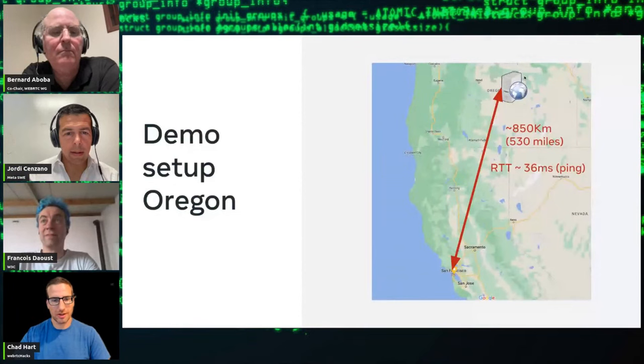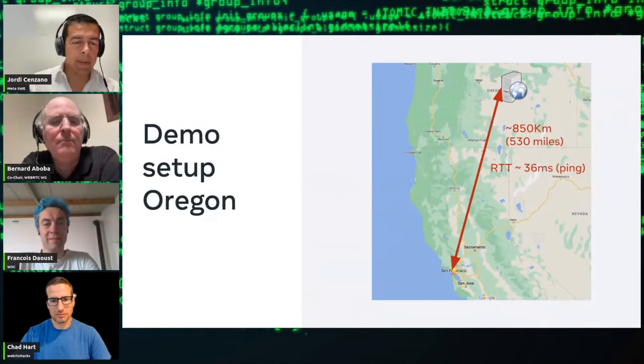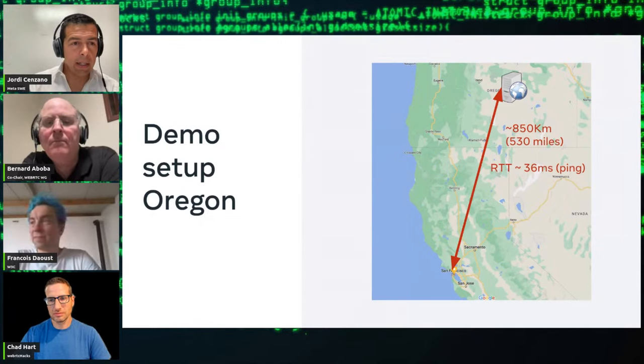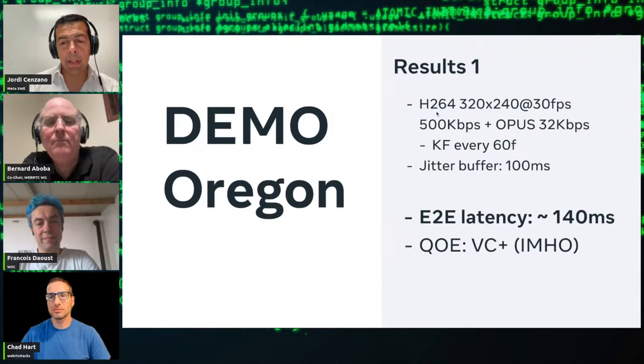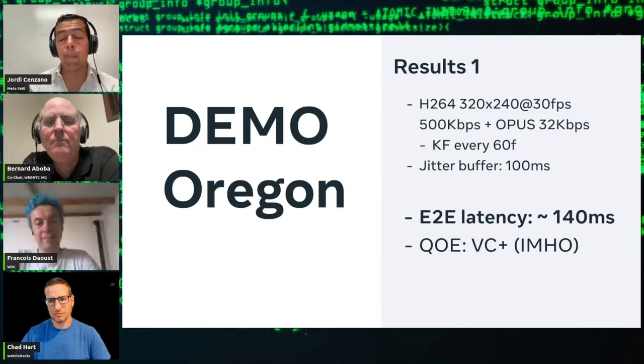Let me show a couple of numbers from my experiments. Basically I did this demo last week while in San Francisco with a relay server in Oregon. I measured the round-trip time — around 36 milliseconds. I did a live stream from San Francisco going back and forth to Oregon: 264p resolution, 30 frames per second, Opus audio at 32 kilobits per second, 500 kilobits per second video. The end-to-end glass-to-glass latency with a very good experience — no drops, very smooth — was 140 milliseconds. The automatic latency measure based on wall clock says 115, but the real glass-to-glass was 140.